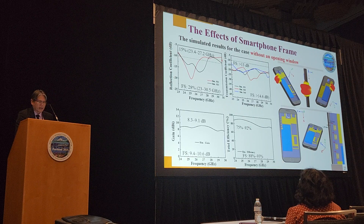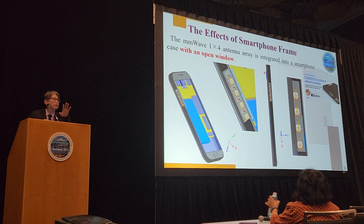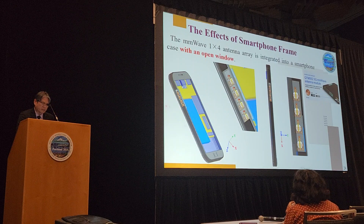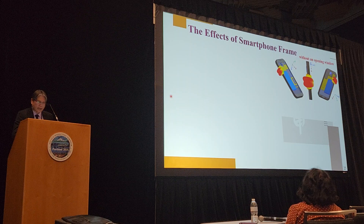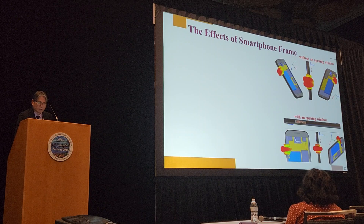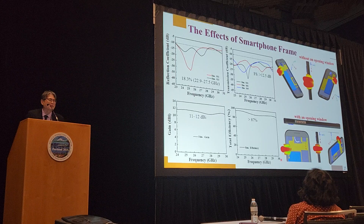We tried to cut a window into the plastic frame, the same as what Qualcomm has done. The window was cut almost the same size as the AIP antenna. Looking at the radiation pattern before and after, you can see that once we cut a window, the whole radiation pattern returns back to normal. But we still have to cover the antenna — we cannot leave it open. That's the remaining question.